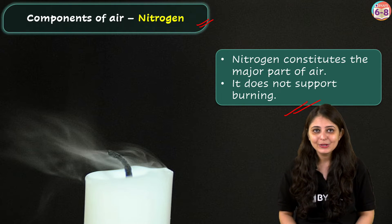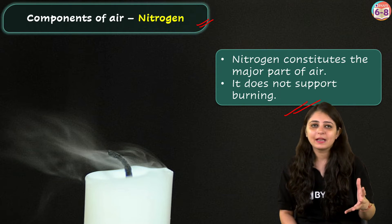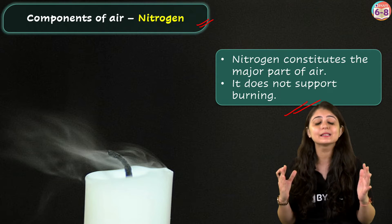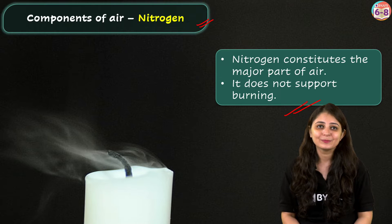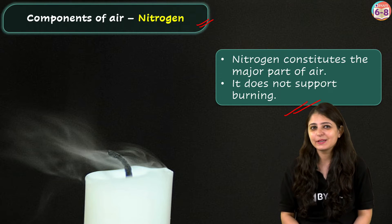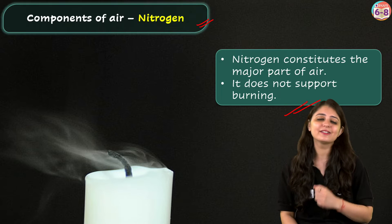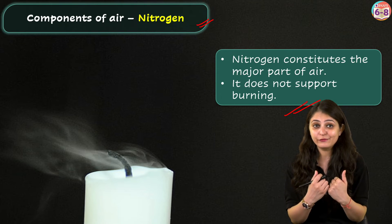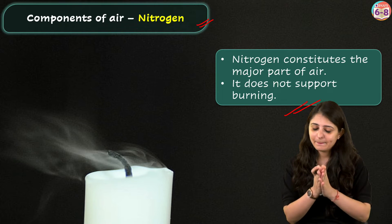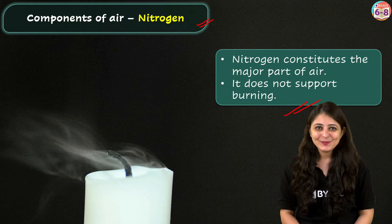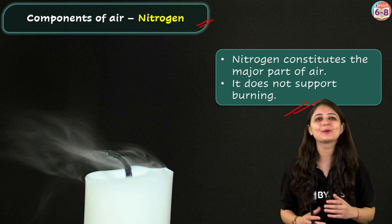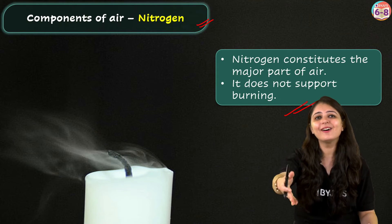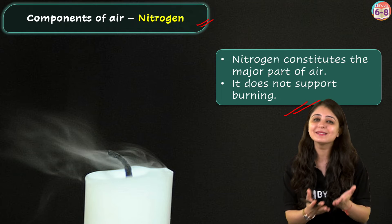Just imagine, if there was no nitrogen present in the atmosphere, all substances would be on fire — so nitrogen is kind of a savior for us. Also, nitrogen is like a special kind of plant food. Just like we need food to grow and stay healthy, plants also need food. Nitrogen helps plants grow big and strong, which is important because we get our food from plants or from animals that eat plants.